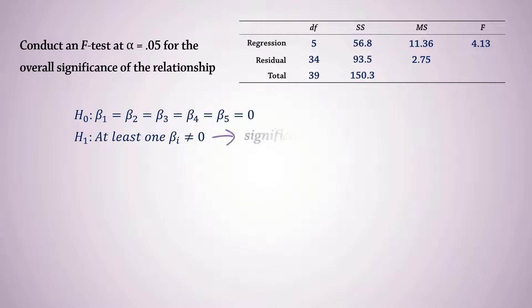That is, at least one independent variable is linearly related to the dependent variable. The test statistic is the F-stat computed here to be 4.13. The critical F value for this test can be obtained from the F-table with numerator degrees of freedom k equals 5 and the denominator n minus k minus 1 equals 34.